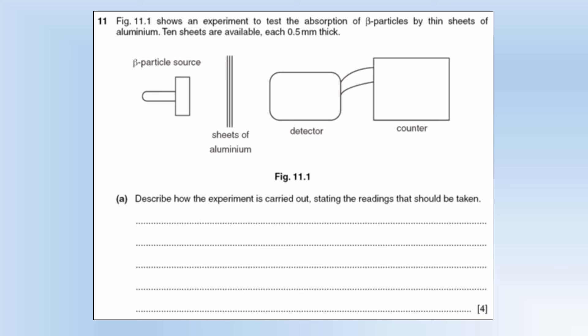So the diagram shows an experiment to test the absorption of beta particles by thin sheets of aluminium. Ten sheets available, each 0.5 millimeters thick. Describe how you'd carry the experiment out, stating the readings that should be taken.